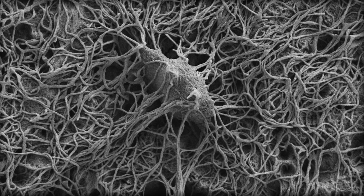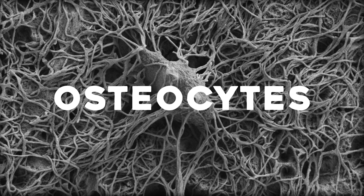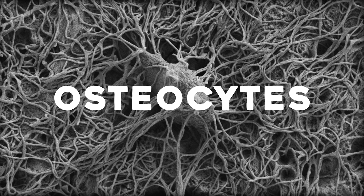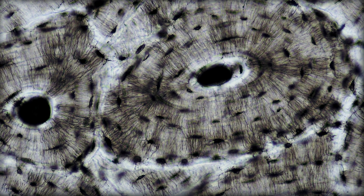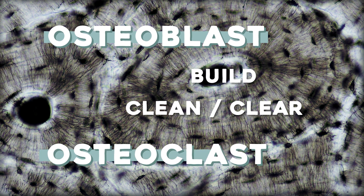So which cells are actually doing the thing? Mature bone cells called osteocytes live in the lacunae and sense any changes to stress placed on the bone, then send out chemical messengers to trigger growth. 90% of our bone cells are osteocytes. The other 10% either build bone — osteoblasts — or clean and clear bone — osteoclasts. That little name trick helps remember who's who.